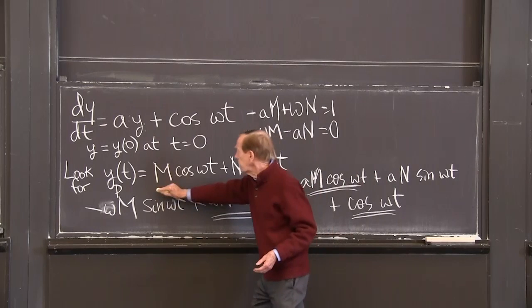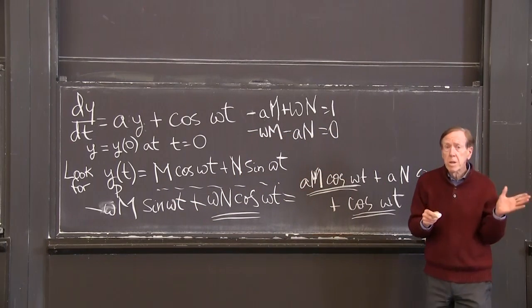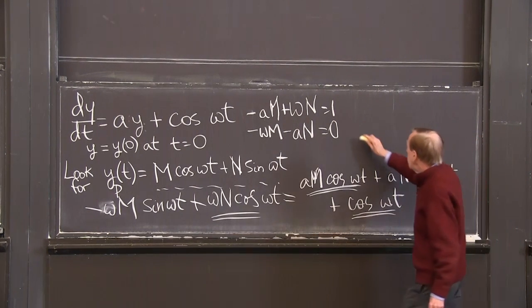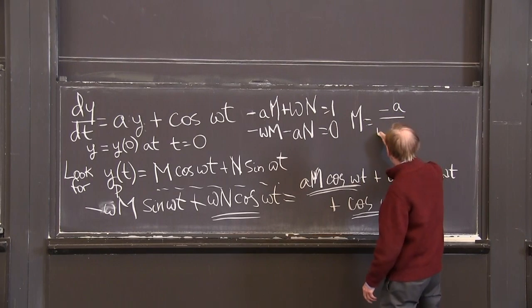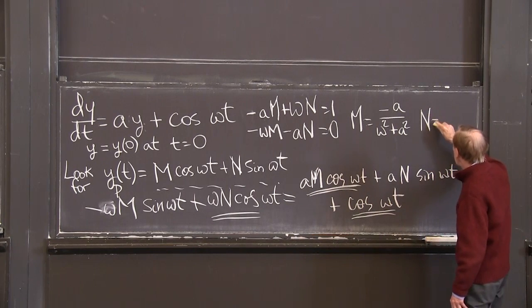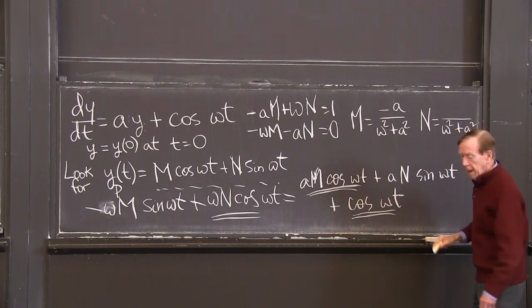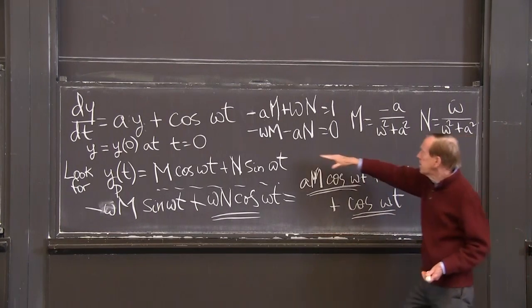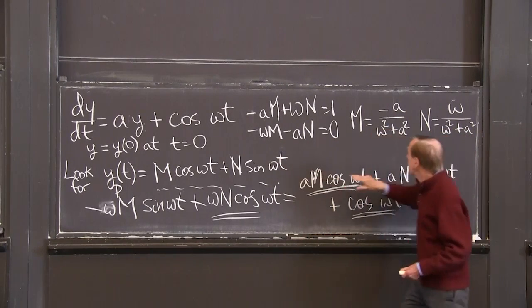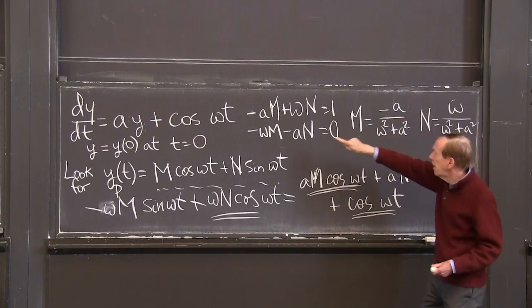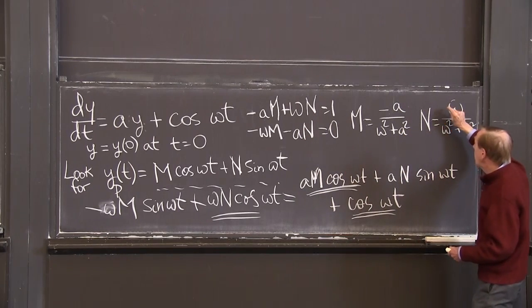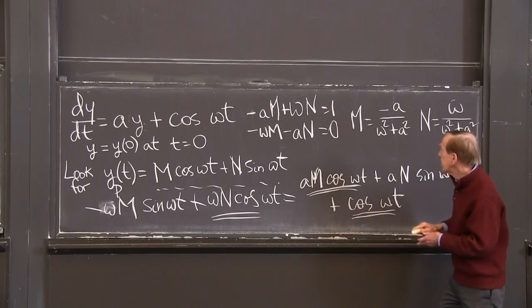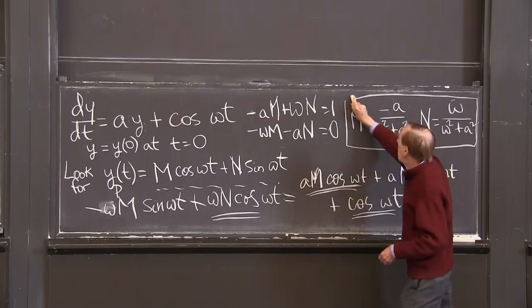I solve those two equations and get the particular solution. It's two equations, two unknowns — the basic problem of linear algebra. m turns out to be minus a over omega squared plus a squared, and n turns out to have that same denominator omega squared plus a squared with omega above it. You can check: omega times m and a times n both give a·omega terms with the same denominator, and they cancel to give 0. So the equation is solved — one more important problem solved.